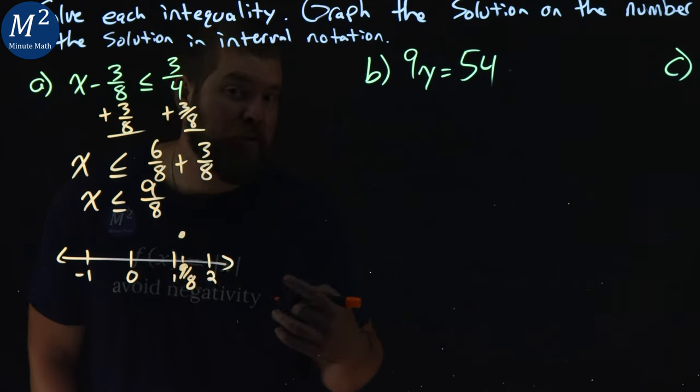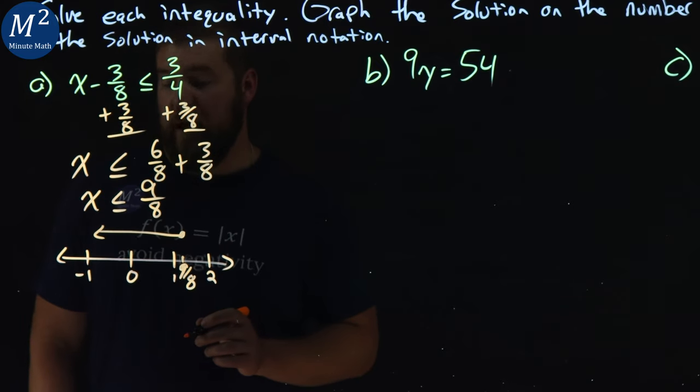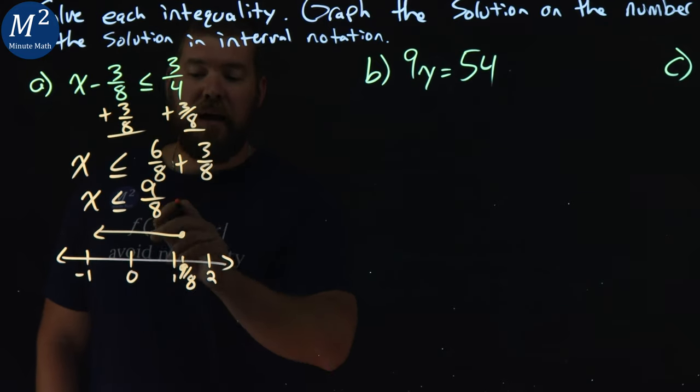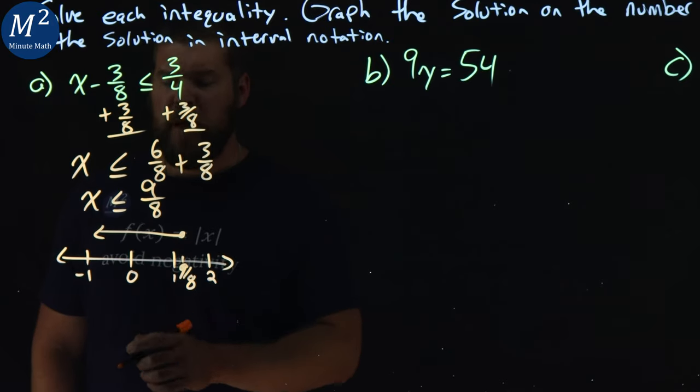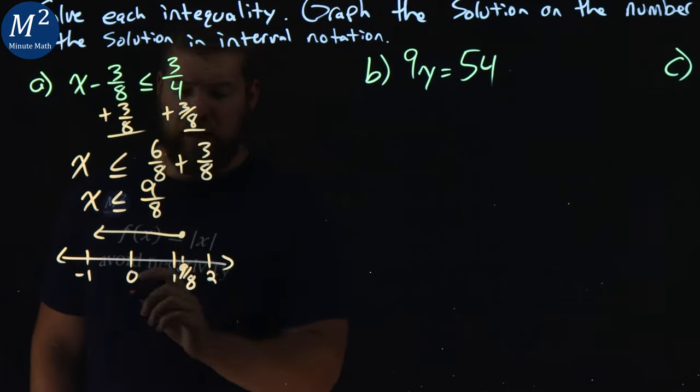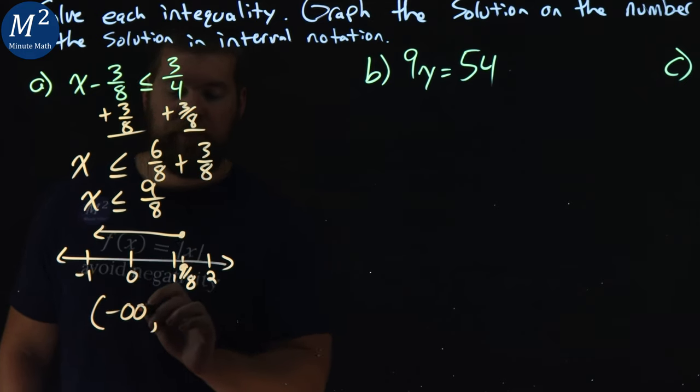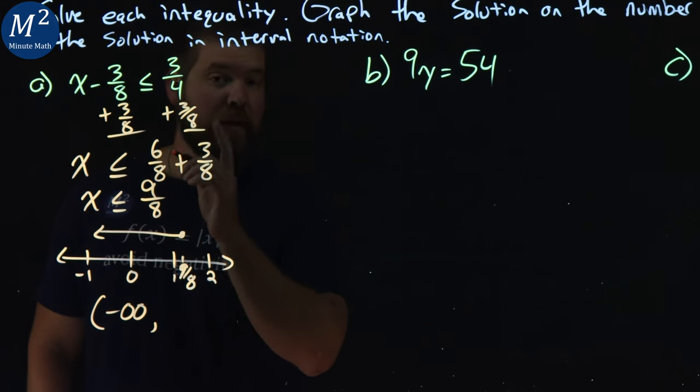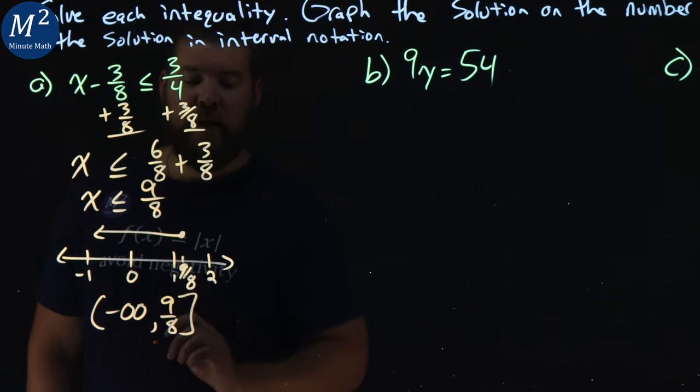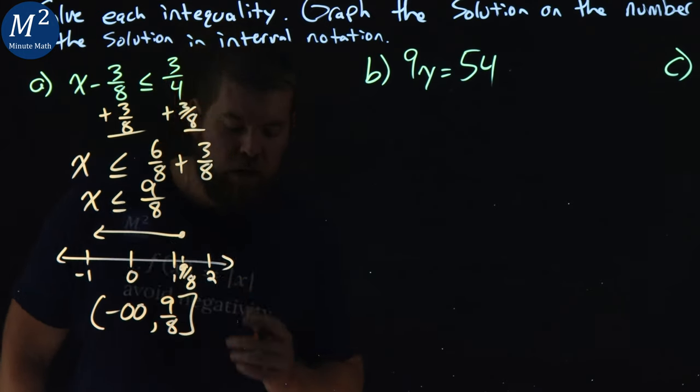Now that says x is also less than that value, so the arrow is going to go to the left. So we have x is less than or equal to 9 eighths. How to write that in interval notation. The lowest value that x can be is negative infinity, put parentheses there. The highest value that x can be, it goes up to 9 eighths and including 9 eighths. Put 9 eighths there, and then we put a bracket showing that we can equal the 9 eighths.